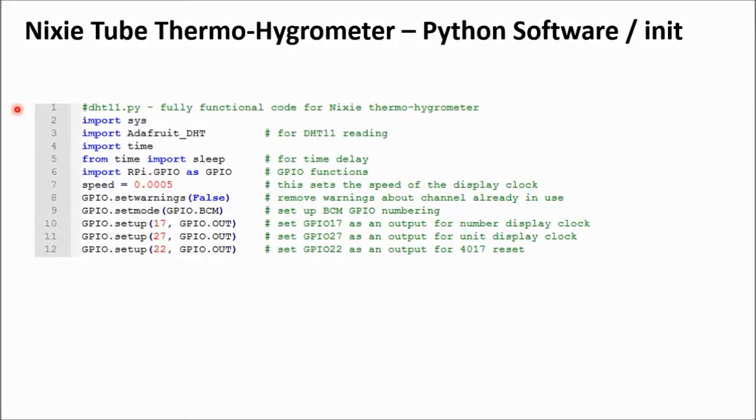So here you see the first part of the software, the initialization. Here you see the Adafruit DHT library. Then we also import the GPIO library of course. Then this constant speed sets the speed of the display clock. So you can play around with it later if you want. And here we go for the GPIO setup. So GPIO 17 is set as an output. It's used for the number of the display clock. GPIO 27 is also set as an output for the unit display clock. And GPIO 22 is the third output and we use that only for the 4017 reset.